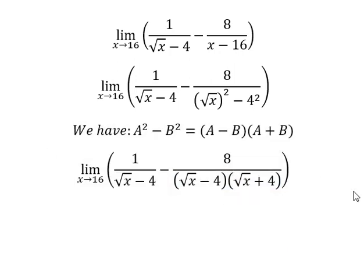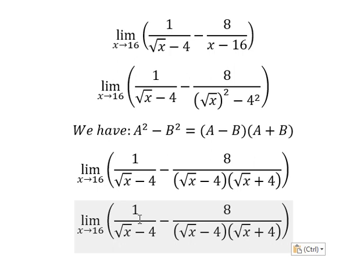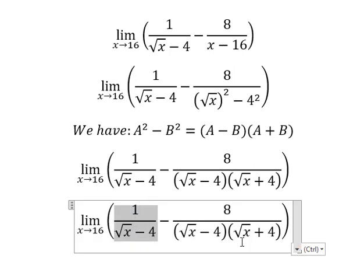We can get a common denominator for the first term by multiplying by square root of x plus 4 over square root of x plus 4.